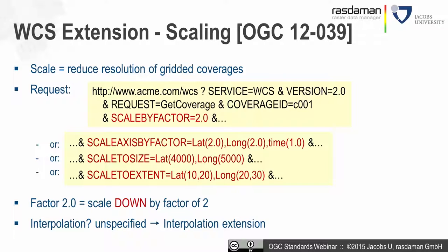Sometimes you want to indicate the target box. The scale to size parameter lets you express the target pixel extent — for example, latitude: 4000 pixels, longitude: 5000 pixels. Another variation is scaling to a geographic extent using lower and upper bounds — for example, latitude from 10 to 20, longitude from 20 to 30. These options allow versatile scaling in multi-dimensional situations.